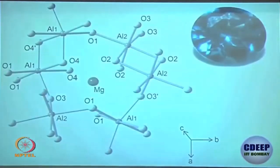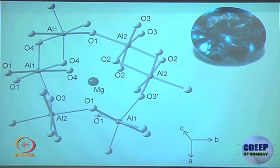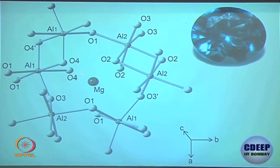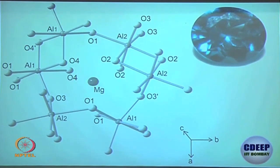Looking at magnesium aluminium oxide: each aluminium is octahedral — you can count 1, 2, 3, 4, 5, 6 ligands. Magnesium has 4 ligands and is in tetrahedral geometry. So magnesium is tetrahedral and aluminium is octahedral.